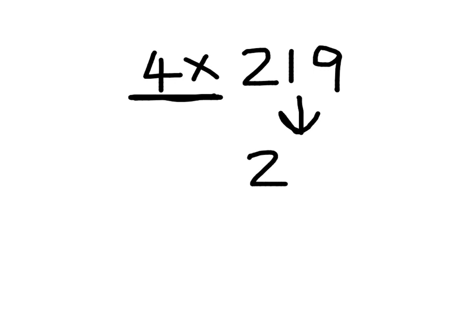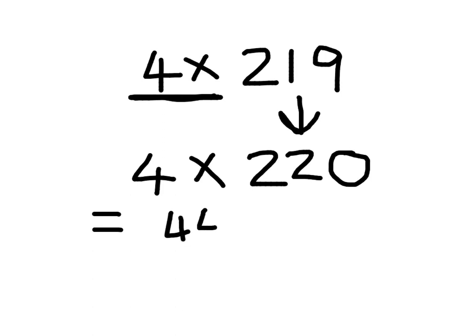That's correct. We can turn 219 into 220. And then it's easier to double it, then double it again. Press pause and double it, then double it again. Doing that is easy. Double the 2 is 4, double the 2 is 4, double the 0 is 0. We have 440.